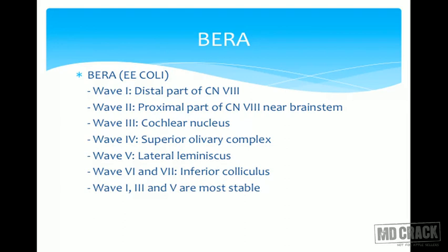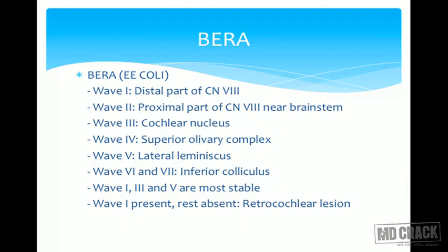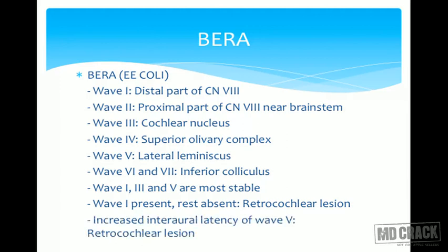Waves I, III, and V are the most stable in BERA. If Wave I is present but all the rest are absent, it indicates a retrocochlear lesion — the cochlear nerve is normal but there is a problem beyond it. Increased interaural latency of Wave V is an important sign seen in retrocochlear lesion.